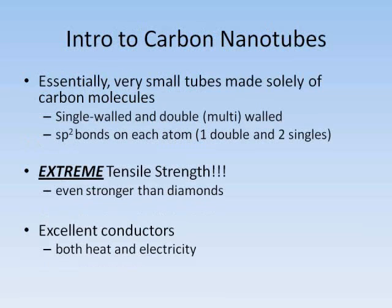Carbon nanotubes are essentially very small tubes made solely of carbon molecules — nano meaning tiny, and tubes, well, you can figure that out. Carbon, if chemically bonded correctly, contains very strong and resilient bonds. Take diamond, for example, one of the strongest substances known to man. Diamond is made solely of carbon molecules.